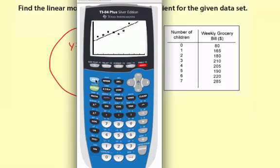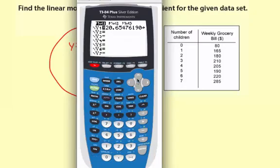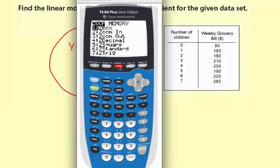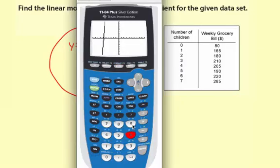If you want to get out of this graph, just go second quit. And under y equals, if you want to turn the stat plot off, you just go up and then you hit enter, and then down so it's not highlighted anymore. And if you want to change your window back to normal, you can go zoom. And then zoom six is the standard window.